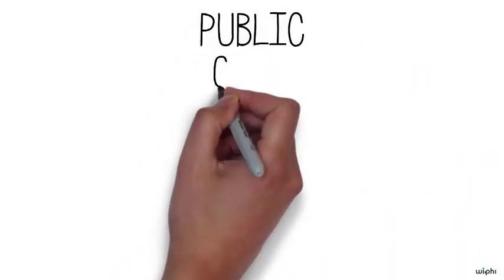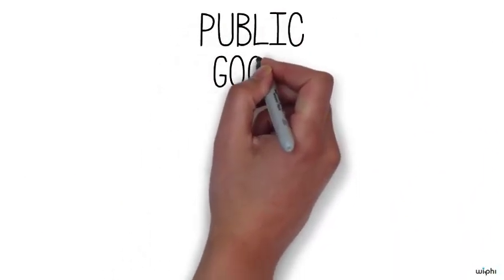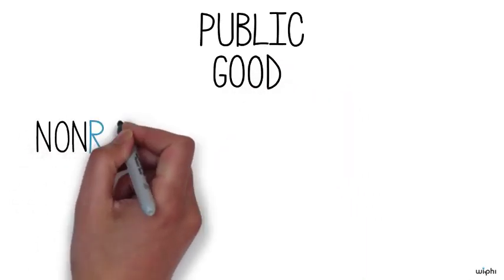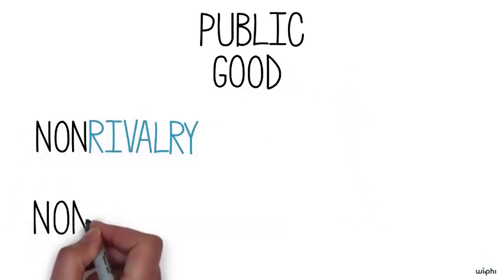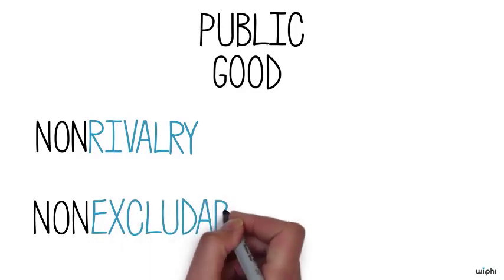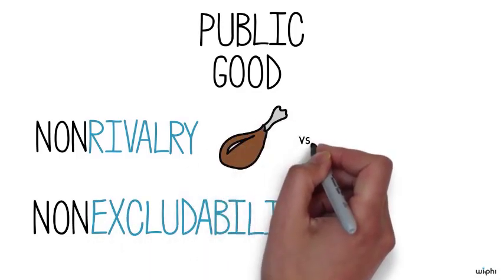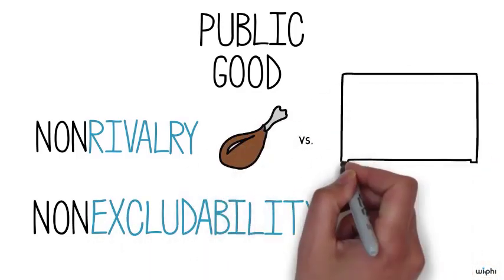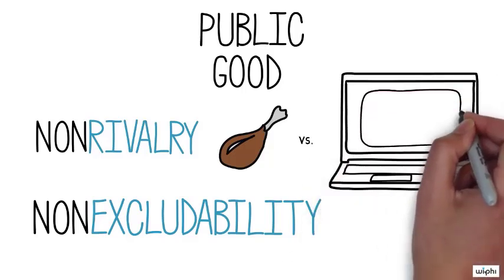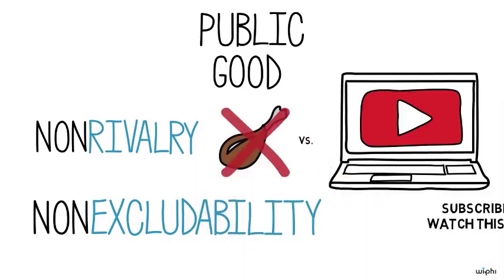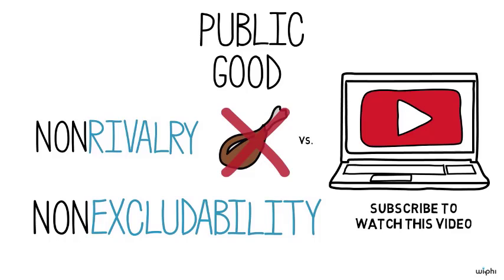In other words, informed voting is a public good in democratic societies. Goods are public when they exhibit two properties: non-rivalry and non-excludability. Non-rivalry exists when one person's consumption of a good doesn't diminish other people's opportunities for consumption, and non-excludability exists when nobody can be excluded from consuming a good once it is produced.